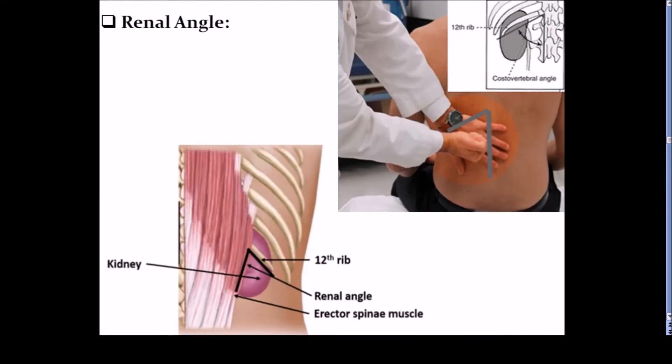Renal angle: it is an angulation between the lower border of 12th rib and the lateral border of erector spinae muscle. This renal angle overlies the lower part of the kidney. The clinical importance of this renal angle is when we apply the pressure over this angle with the thumb, tenderness in the kidney is elicited. So this is the clinical importance of renal angle.